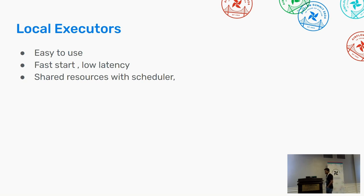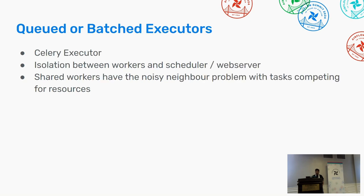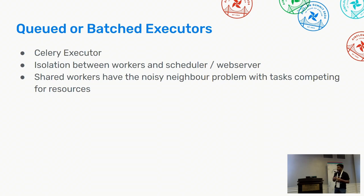Most users start with local executors for testing and then move to others. The next type is the queued or batch executor — Celery executor is an example. Here, workers are waiting on the queue and the executor sends tasks to the queue. With the Celery executor, there's isolation between the worker and the scheduler, which is really good. The downside is that when you have a lot of tasks competing for specific resources, it can become a bottleneck due to that isolation.